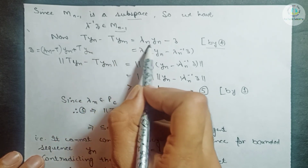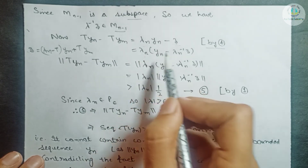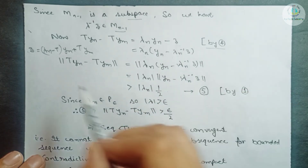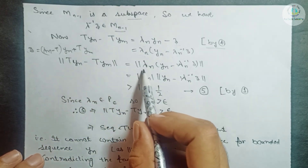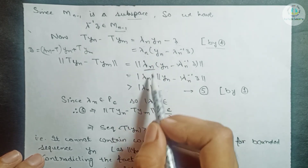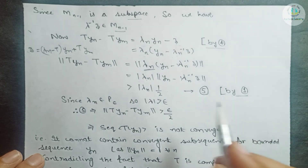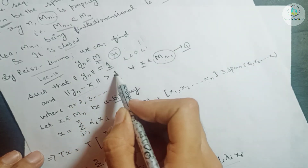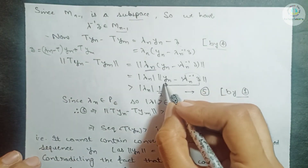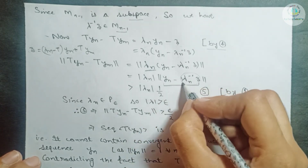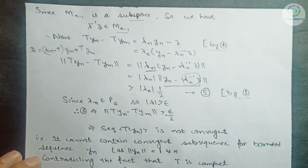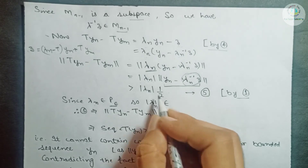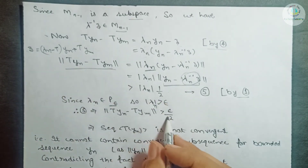Taking norms on both sides: ‖Tyₙ − Tym‖ = ‖λₙ‖ · ‖yₙ − λₙ⁻¹z‖. Since λₙ⁻¹z belongs to Mₙ₋₁, by equation number 1 we have ‖yₙ − λₙ⁻¹z‖ > 1/2. Also, since λₙ ∈ P(ε), we have |λₙ| > ε. Therefore ‖Tyₙ − Tym‖ > ε · (1/2) = ε/2. Mark this as equation number 5.